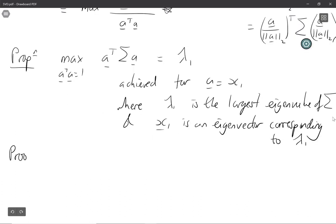So let's prove this. Well, we know that the variance matrix is an n by n symmetric matrix.